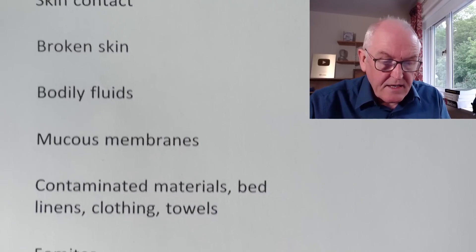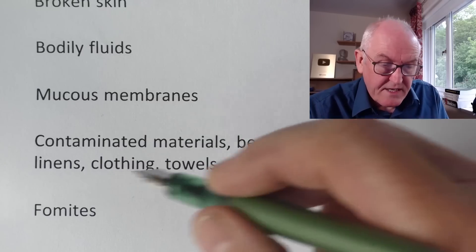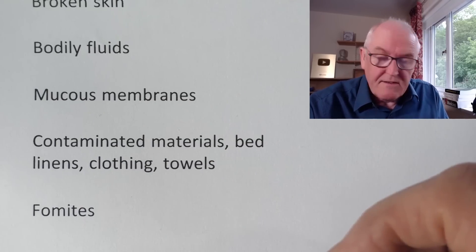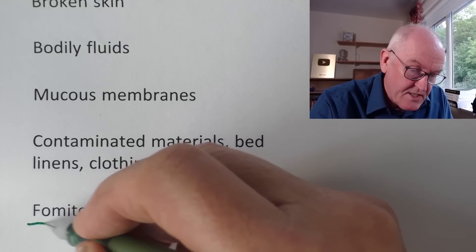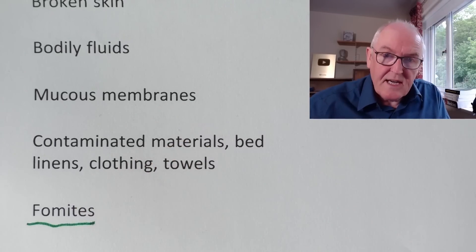It can also be spread through contaminated materials — bed linen, clothing, towels — anything like that. A fomite is a physical object like a surface on which the virus can sit. Although the virus has been spreading in the male homosexual community at the moment, it's perfectly capable of spreading anywhere. That's just where it started off.